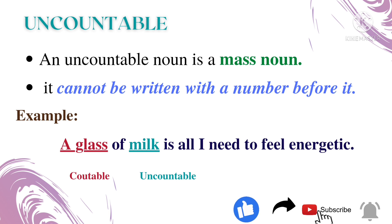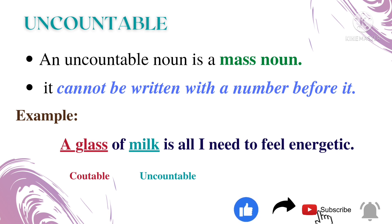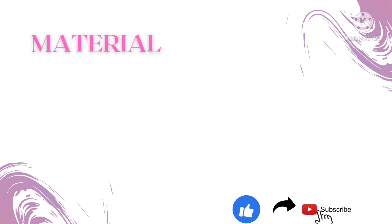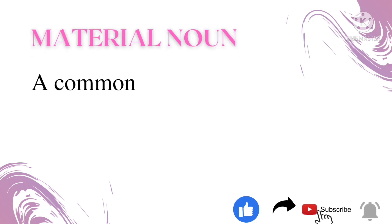What is an uncountable noun? An uncountable noun is a mass noun — it cannot be written with a number before it. Example: 'A glass of milk is all I need to feel energetic.' Here, 'a glass' is a countable noun, whereas 'milk' is an uncountable noun.